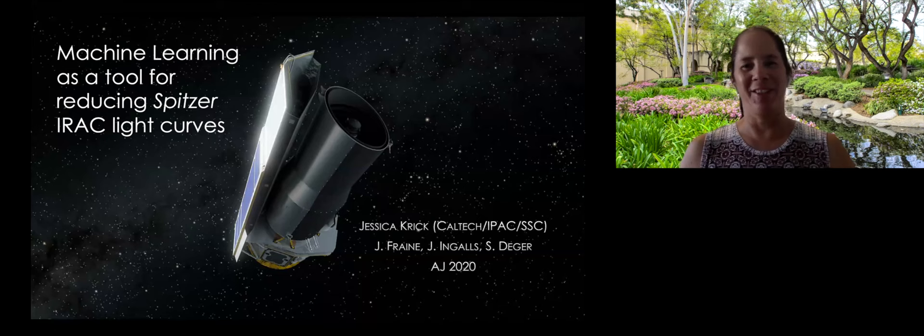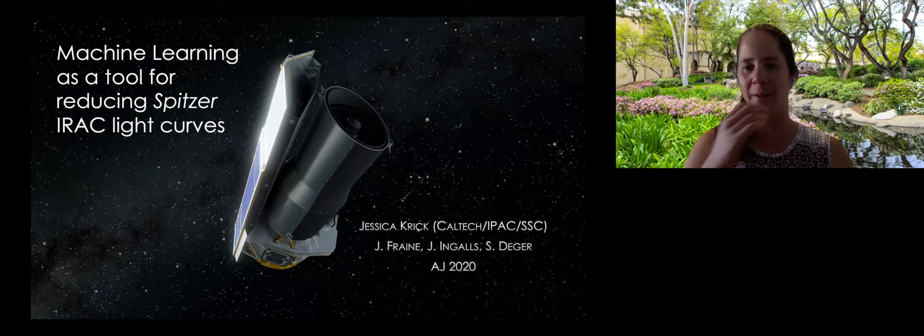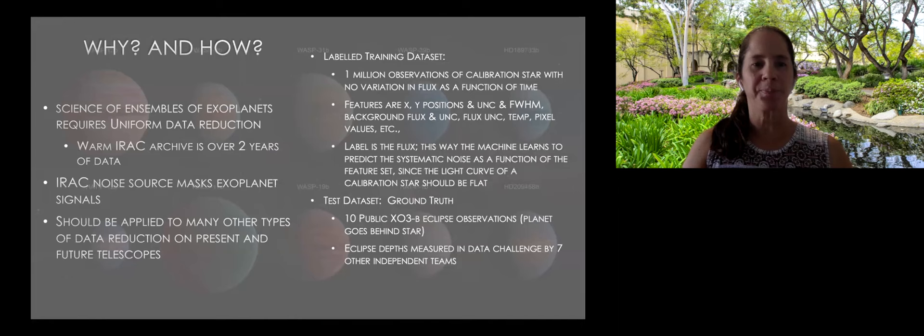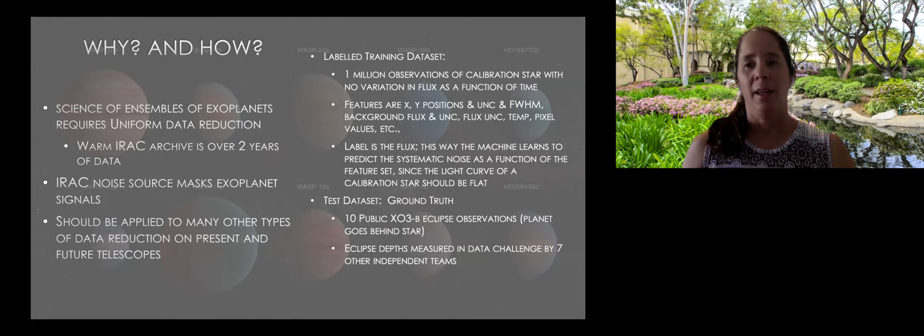Oh, hello. Let me start sharing. All right. So I'm going to talk to you today about machine learning as a tool for reducing Spitzer-IRAC light curves. This is work done with John Ashrafrain, Jim Ingalls, and Sinan Degger published earlier this year. A quick overview is that Spitzer is an infrared telescope in space. I'm talking about using the infrared camera to observe exoplanets. And in particular, the science that I want to do, or the science that I want to enable is the science of ensembles of exoplanets.